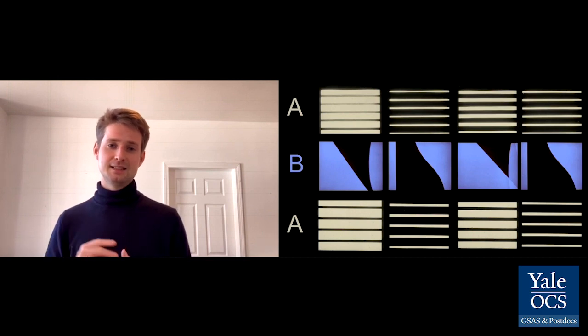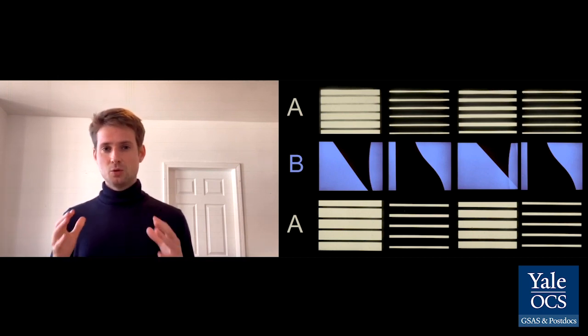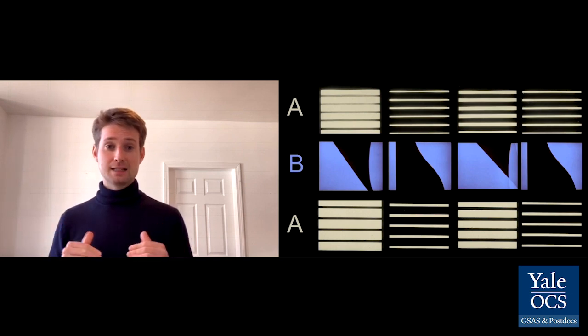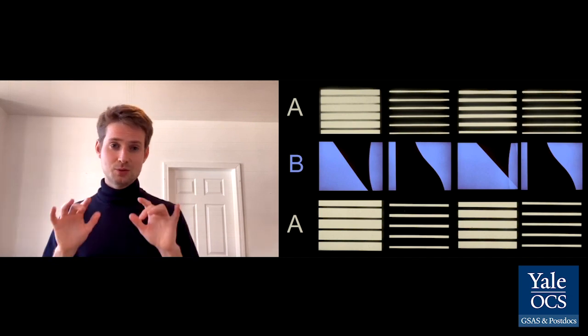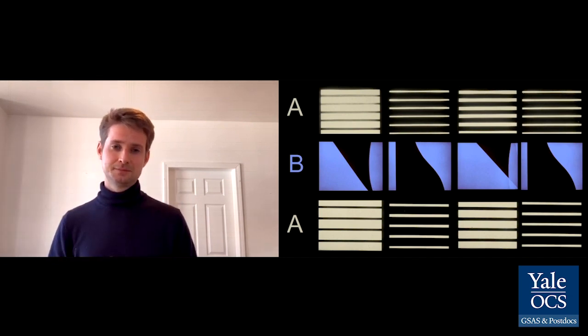The second technique Ruttmann uses is rhythm. So if you would see this film, you would notice that horizontal bars flash in time like music. One, two, three, four, one, two, three, four, and so on. So Ruttmann uses repetition and rhythm to musicalize his film.